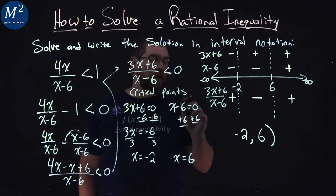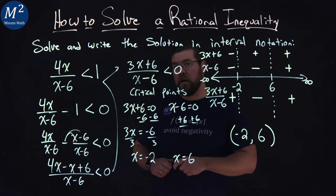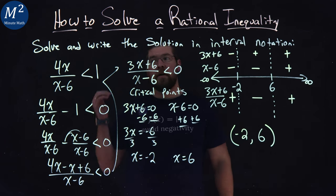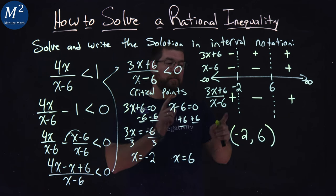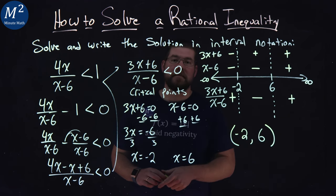Since there's no equal sign in our inequality, this also has to be a parenthesis. And so now we have our interval notation for the final answer. The answer is from negative 2 not including negative 2 to 6 not including 6.